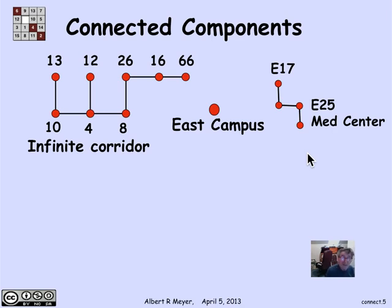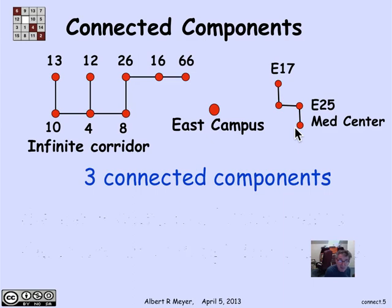That is, you have to go outside to get from East Campus to the Infinite Corridor or from the Infinite Corridor to the Medical Center, unless you sneak through the basement and other restricted areas. So this is one graph. It's not three graphs. This is one graph which has three parts, and so it has three connected components.